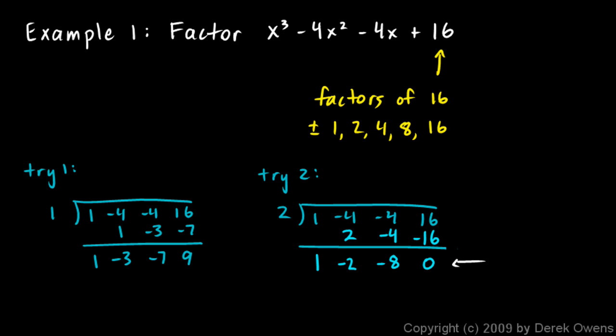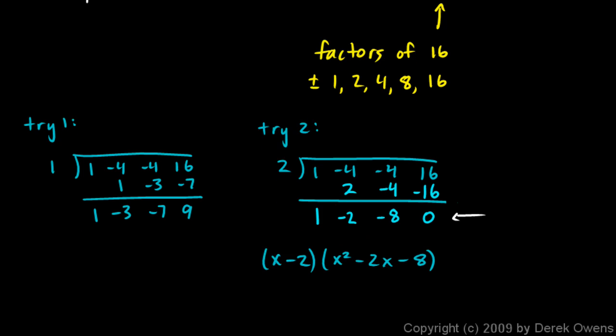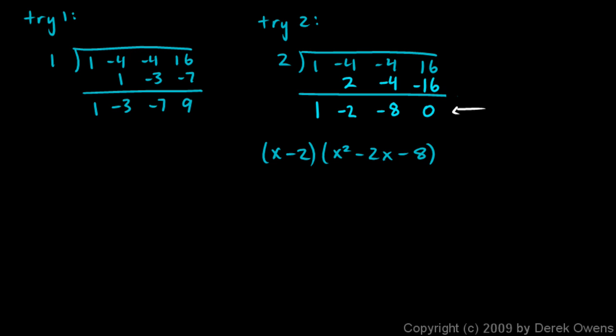A 0 remainder means that x minus this number is a factor. And then the other factor will have coefficients that we get from those numbers down there on the bottom. So the polynomial factors as x minus 2 times x squared minus 2x minus 8. And then we can try to factor this quadratic.